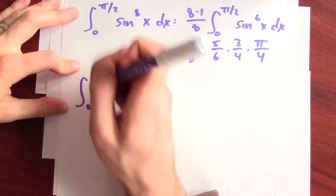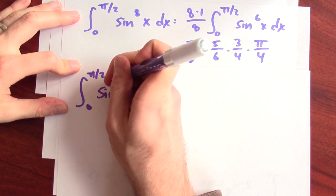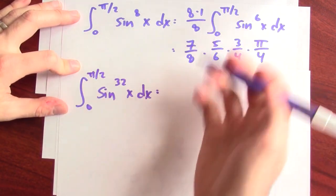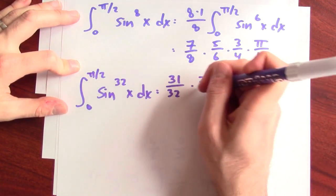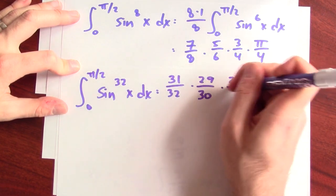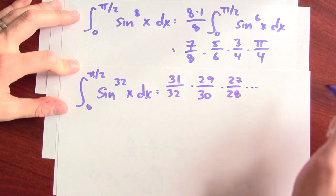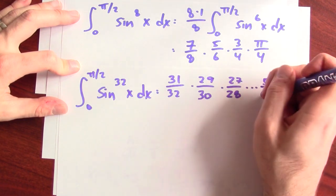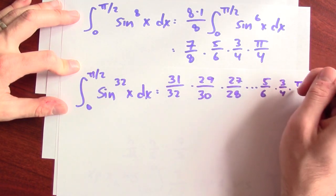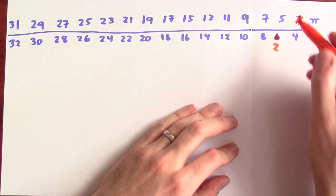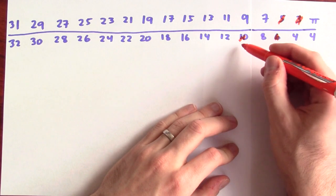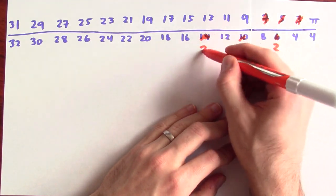What's the integral of sine to the 32nd power? The integral from 0 to pi over 2 of sine to the 32nd power, just following this pattern, will be 31/32 times 29/30 times 27/28, and I keep going until I get down to 5/6 times 3/4, and then finally times pi over 4. And now we can cancel like crazy. This 3 and this 6 give me a 2. This 5 and this 10 give me a 2.